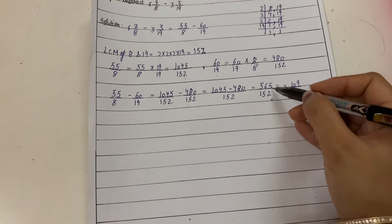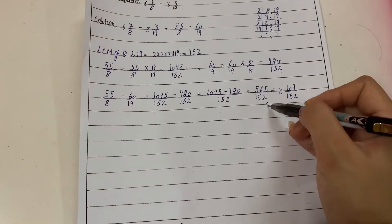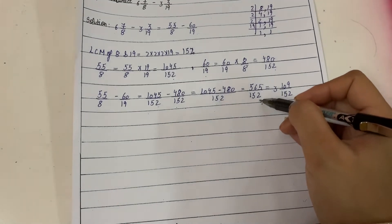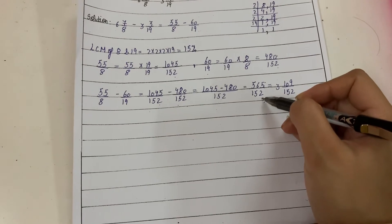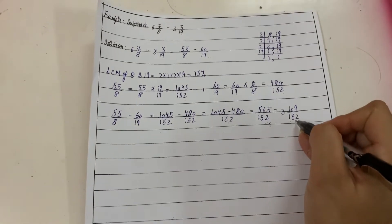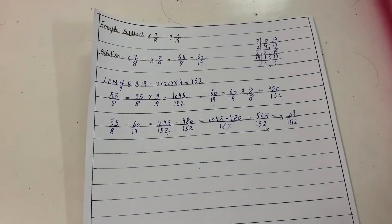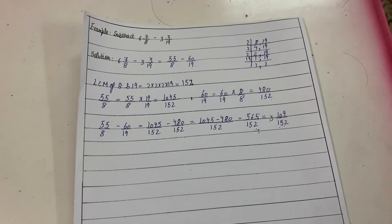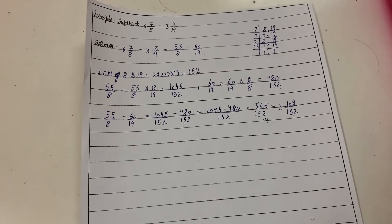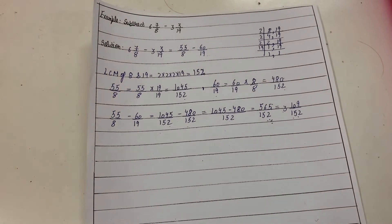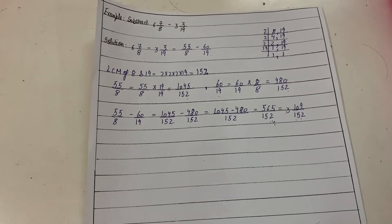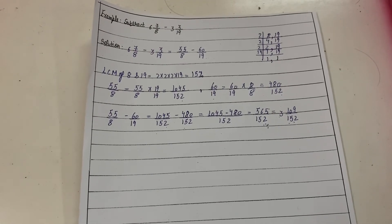565 upon 152 is an improper fraction and is not reducible. Converting to a mixed fraction, we get 3 and 109 upon 152 as your answer. In this chapter on fractions, we learned: making fractions, ascending and descending order, converting to mixed fractions, filling in blanks for equivalent fractions, and addition and subtraction. I hope the topics of chapter 7 are clear to you. Thank you.